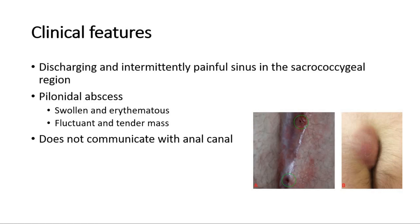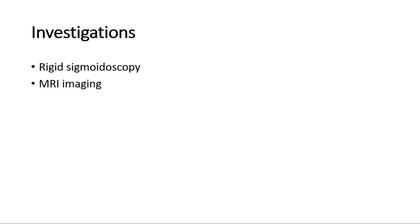The main distinguishing feature compared to a perianal fistula is that a pilonidal sinus does not communicate with the anal canal. If there is any uncertainty on initial inspection, a rigid sigmoidoscopy or MRI imaging can be performed to assess for any internal opening of a tract.